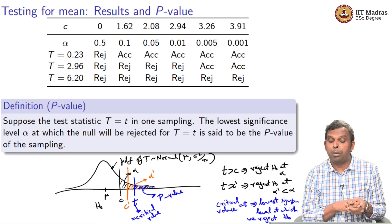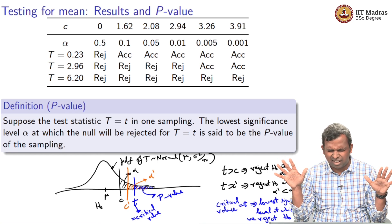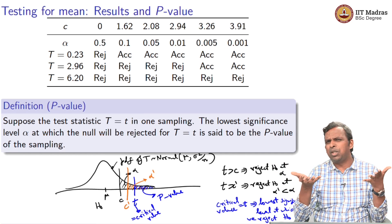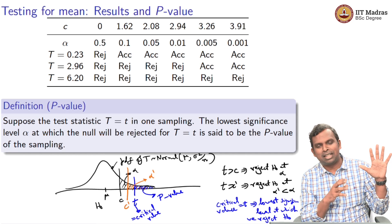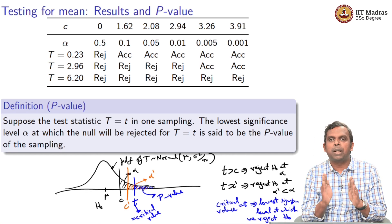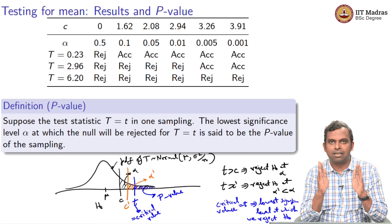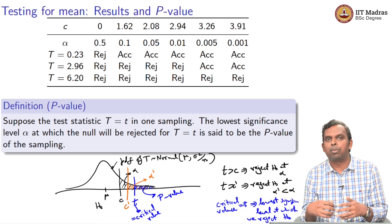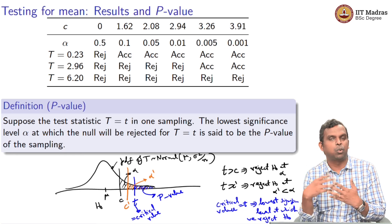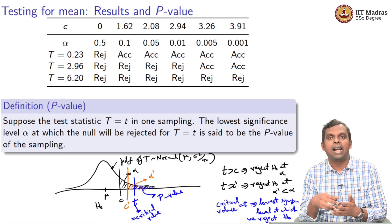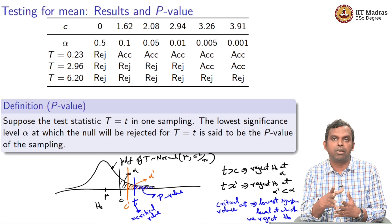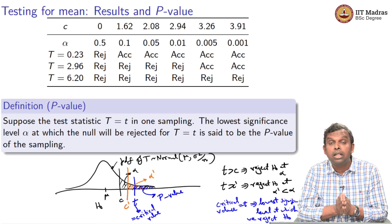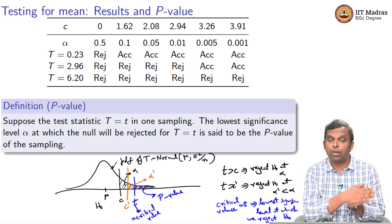Quite often what people do is forget about the significance level. Once you start thinking in terms of p-value, there is really no significance level. Whatever the significance level may be, you simply report your test statistic T and your p-value — some probability like 0.002, 0.2, 0.3, 0.12 — whatever p-value you get, you simply report only the p-value.